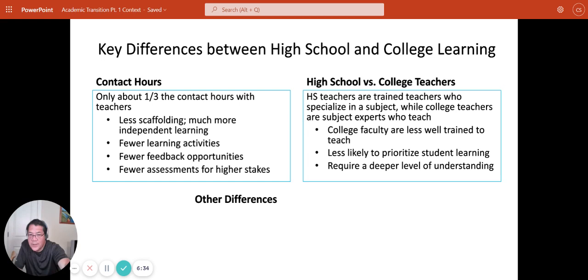The second difference has to do with high school teachers versus college teachers. High school teachers are trained teachers. They have a certification. They've gone to a school of education and they have been trained to teach and then they specialize in an area. College teachers have specialized in an area and then they teach that area.